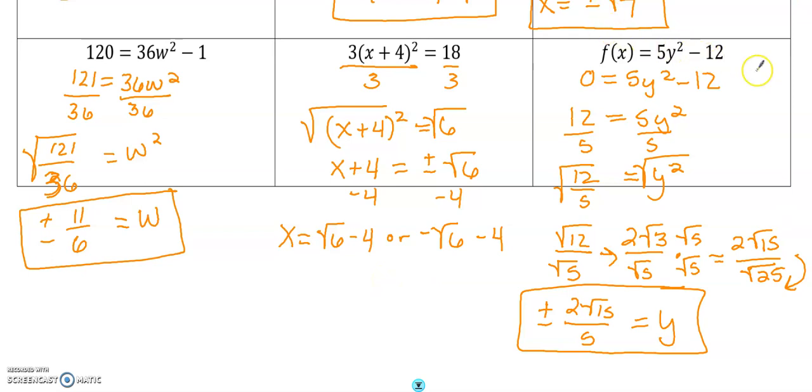Our last one was a little more complicated than expected, I think. We're going to add 12 to both sides and then have to divide by 5. Here we have 12 over 5 equals y². We take the square root of both sides.